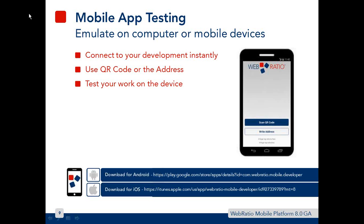After the development phase, you want to test and emulate the mobile app on your computer or directly on your mobile device. We will see later in the live demonstration how to emulate on your computer. To emulate on mobile devices, you can use the WebRatio mobile developer app, which is available on Google Play Store or iTunes. This app lets you connect to your development environment instantly by scanning a QR code or typing the address of your development environment.